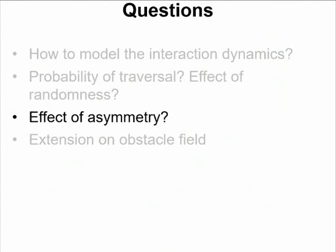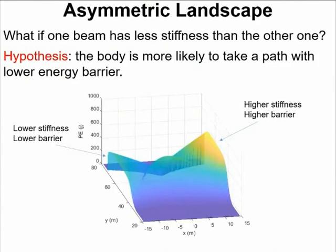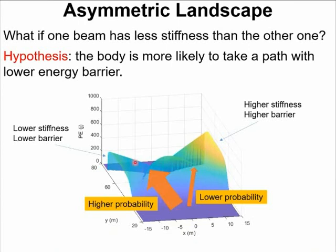In the natural environment, the obstacles are rarely symmetric. So on this model, we also want to find out the effect of the asymmetry. By setting different stiffness, we can get energy barriers with different heights. From the landscape, we can guess the body is more likely to take a path on the lower energy barrier side.